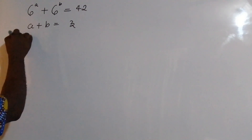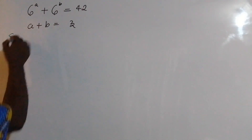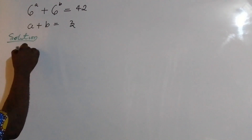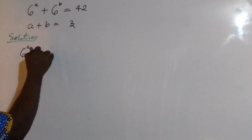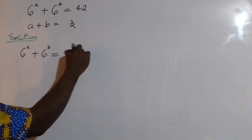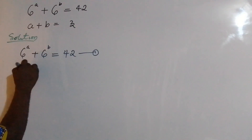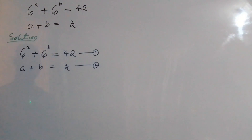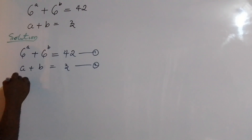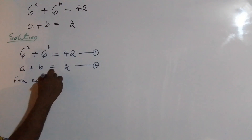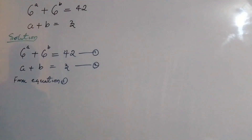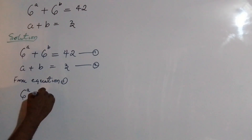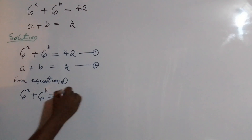So starting with our solution, we have 6 to the power of a plus 6 to the power of b equal to 42 — I'm going to call this equation one. And then I have a plus b equal to 3 — I call this equation two. From equation one, I'm going to have 6^a + 6^b = 42.